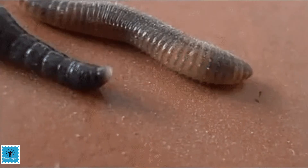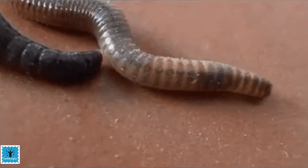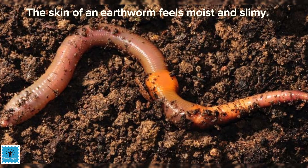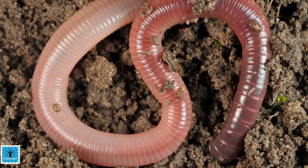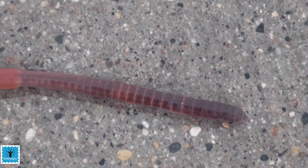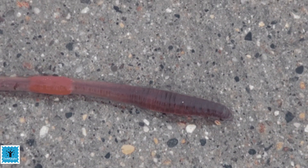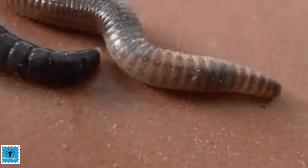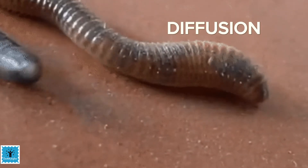Next we have earthworms. They don't have any special organ for breathing, so they breathe through their skin. Their skin is moist and slimy — air dissolves on the mucus of their skin, so they must stay moist to breathe. The oxygen-rich blood moves through the skin and enters the bloodstream. Carbon dioxide moves out of the earthworm through the skin by diffusion.